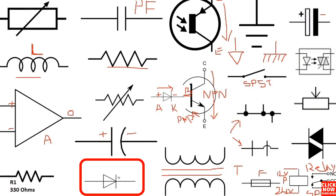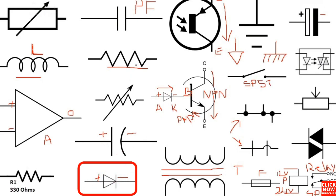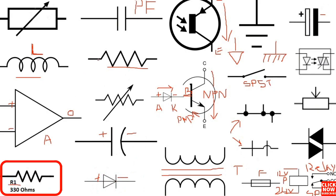Here we have a diode — this is the symbol for the diode as we have seen before. The diode has the anode and the cathode. And here we have a resistor — the reference for the resistor is R, which means resistor.